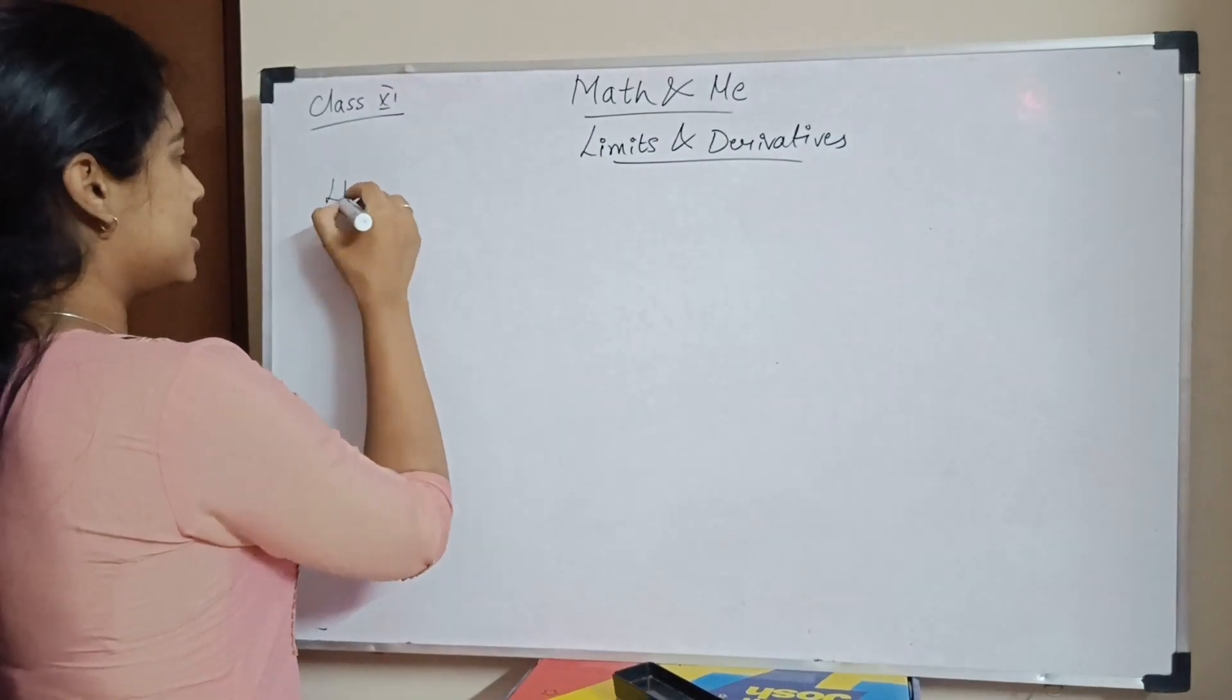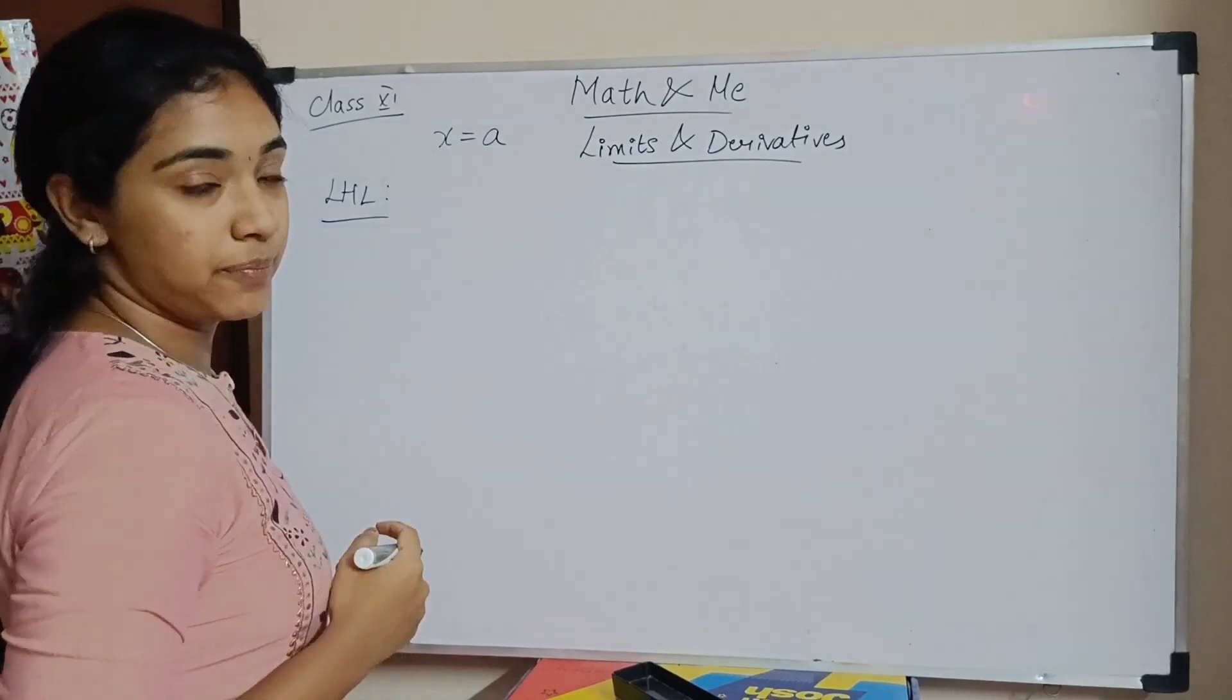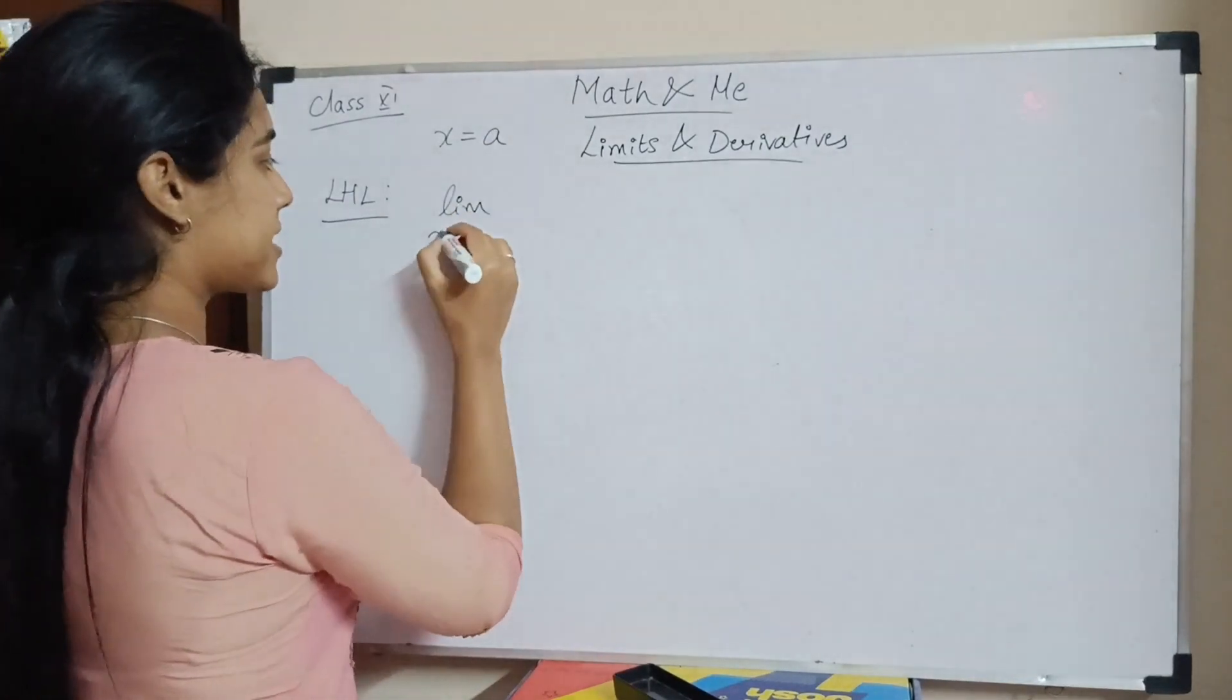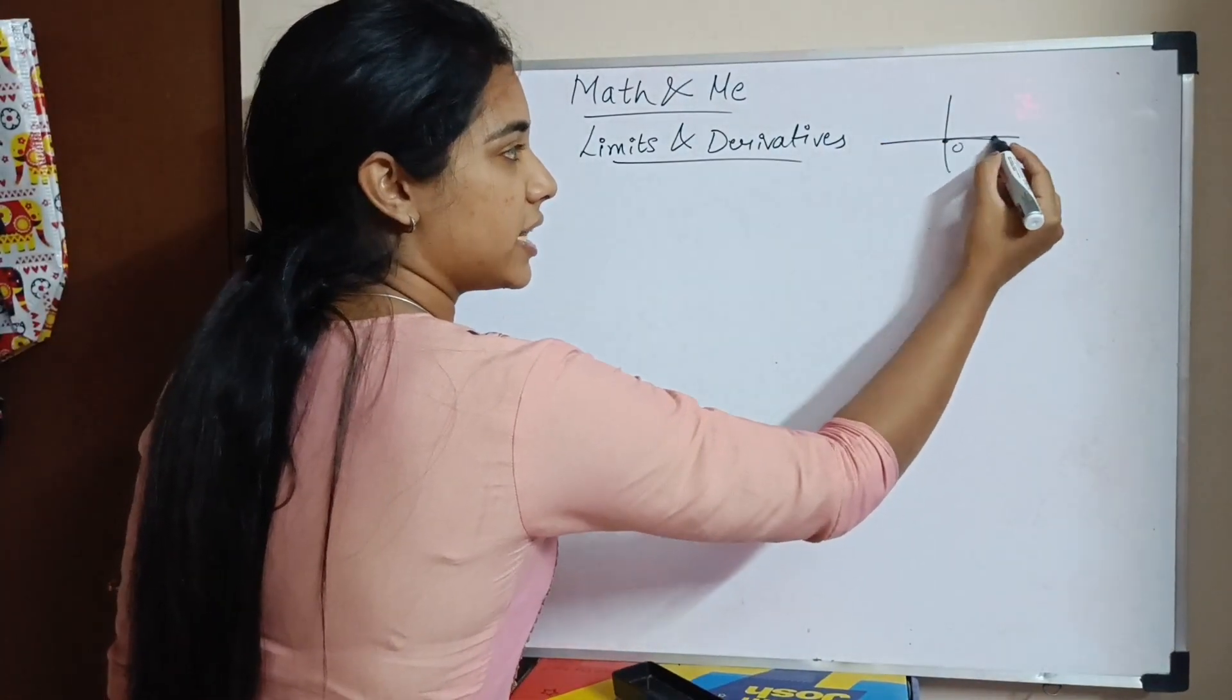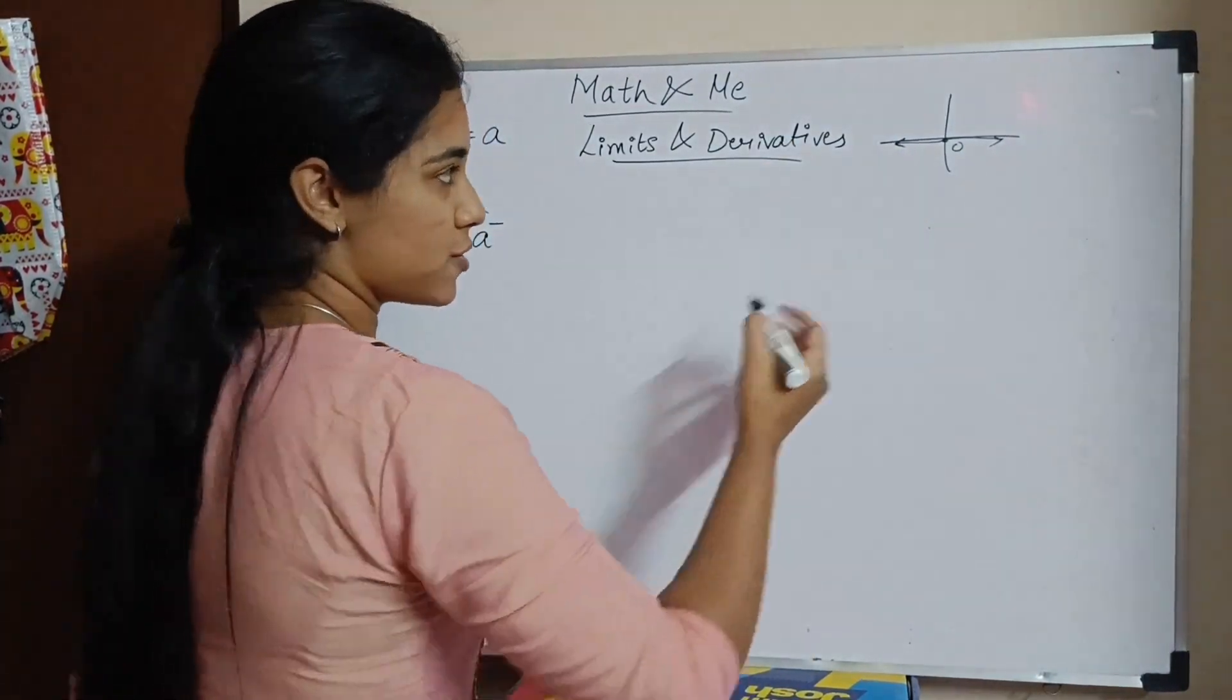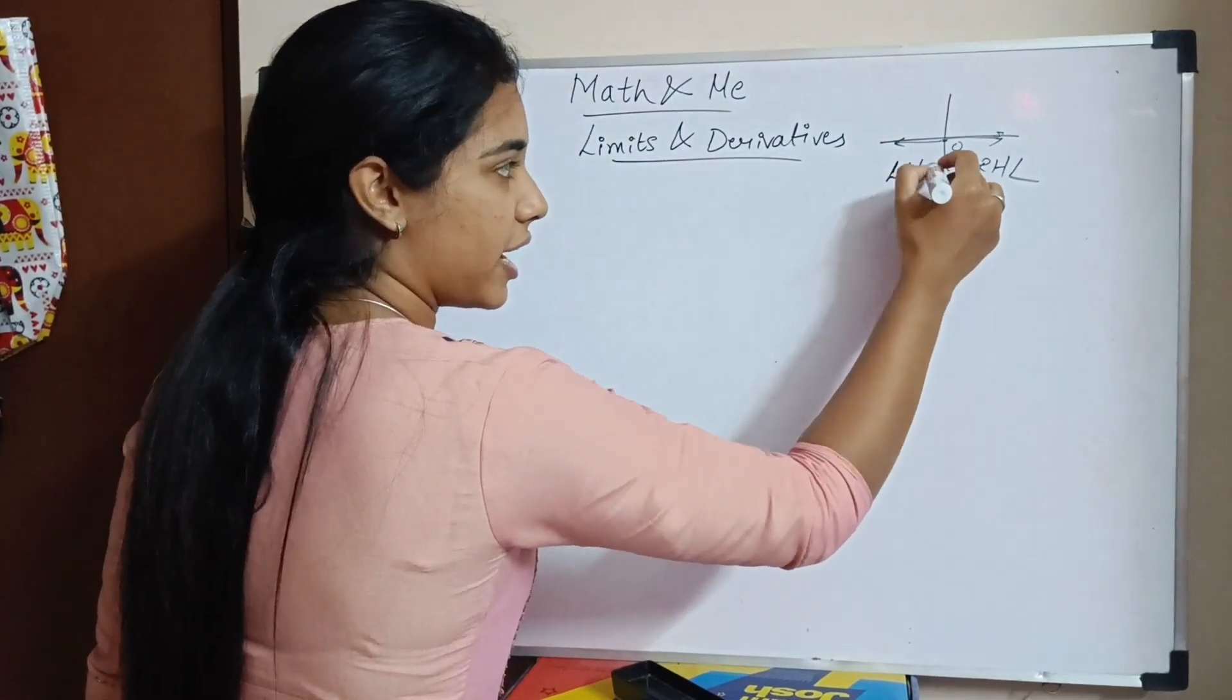First is the left hand limit. Basically you have some value where x is a. One value equal limit x tends to a minus. This is the 0 point. In the right side you have positive values, left side you have negative values. This is the right hand limit. This is the left hand limit.